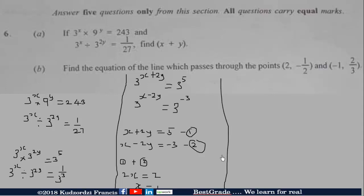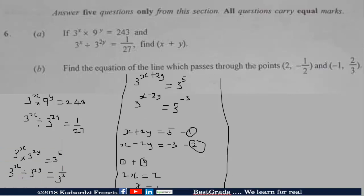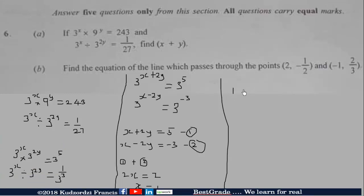Since X equals 1, we substitute into equation 1. We get 1 plus 2Y is equal to 5. So 2Y is equal to 5 minus 1, which is 4, and therefore Y is equal to 2.